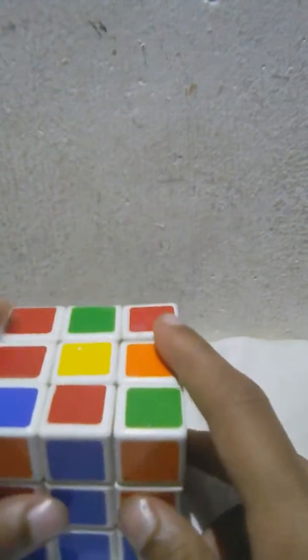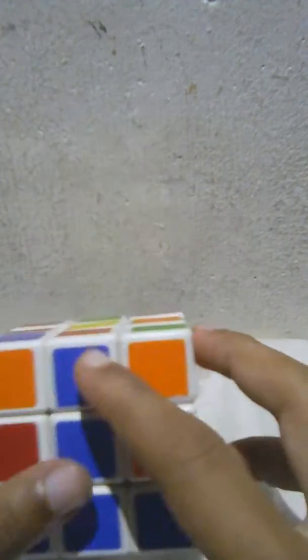Then, we have to find edge pieces which are non-yellow. So, let's find. Yeah, it is a non-yellow.